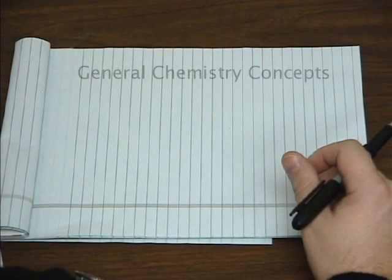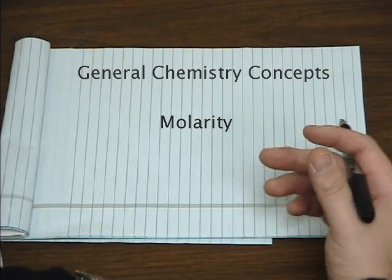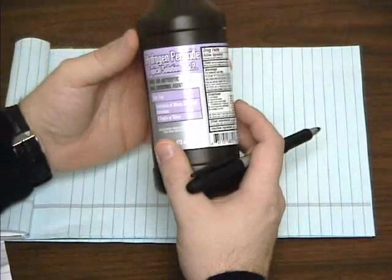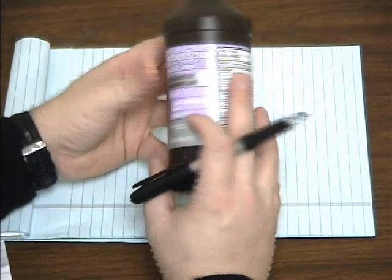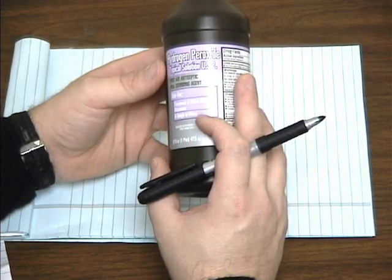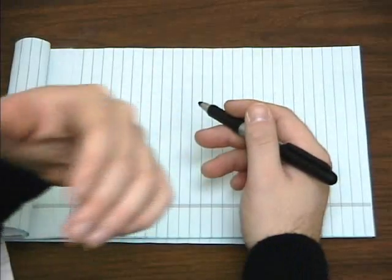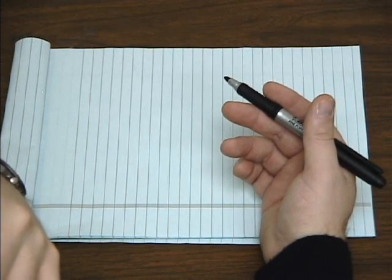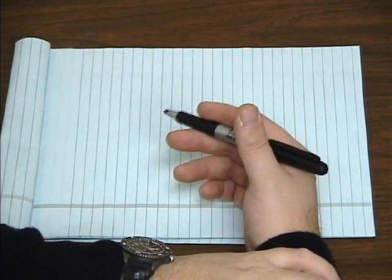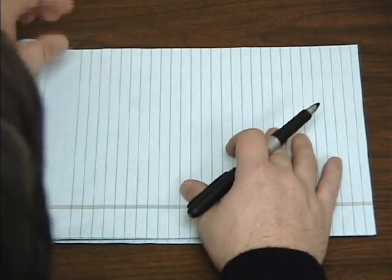There are a lot of different ways that you can express the concentration of a solution. For example, if you look at a commercial bottle of hydrogen peroxide, it says it is 3% hydrogen peroxide. That means that if you have a 100 milliliter sample of the solution, 3 milliliters of it, or 3%, is actually hydrogen peroxide.